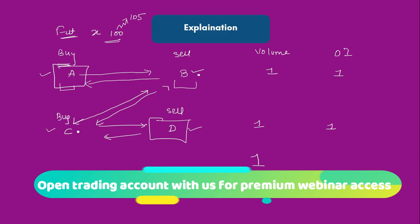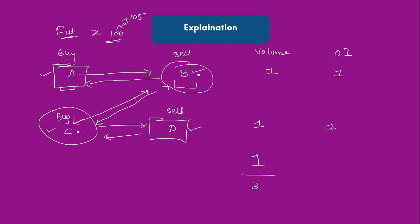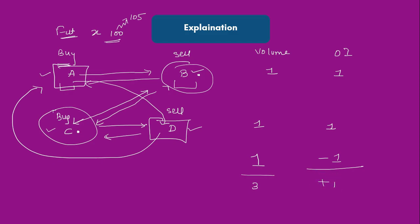Now B is out of the trade and C is out of the trade — they have come out of their positions. Virtually there is only one open position remaining, between A and D. So if A wants to square off, D has to agree, and vice versa. The contract which was between A and B, and C and D, is now between A and D only, as B and C have moved out. Open interest is now minus one, so net open interest is only one. This type of squaring off where both parties exit is called unwinding — you are coming out of the trade and closing the open contract.